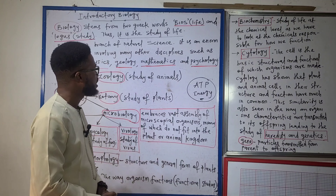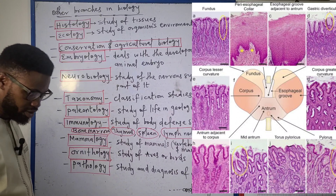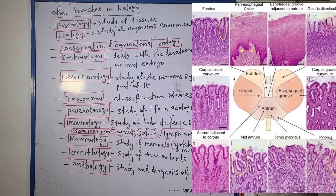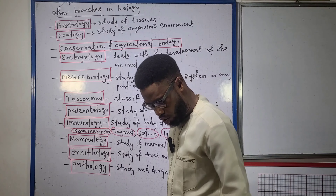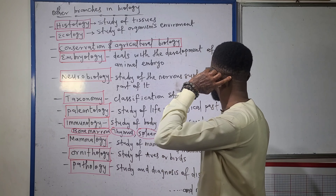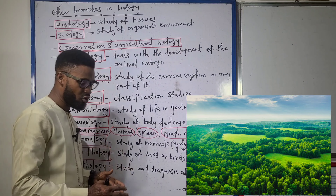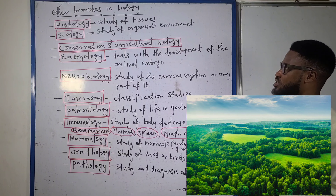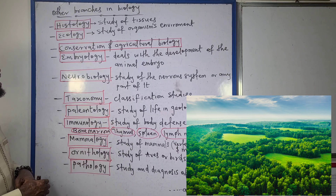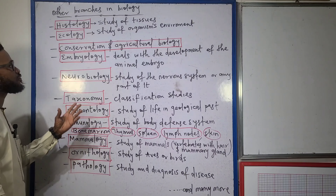Other branches of biology include histology — the study of tissues, where tissues are a group of cells similar in structure working towards performing a particular function. We also have ecology — the study of the environment of organisms. If we are to survive, we must know our environment thoroughly, because the food we eat and all the roles we perform — our ecological niche — take place in our environment.